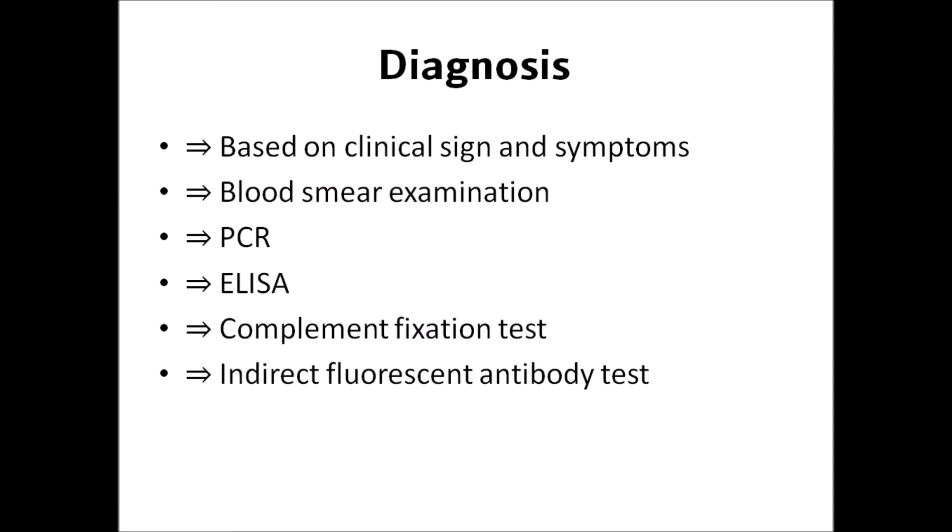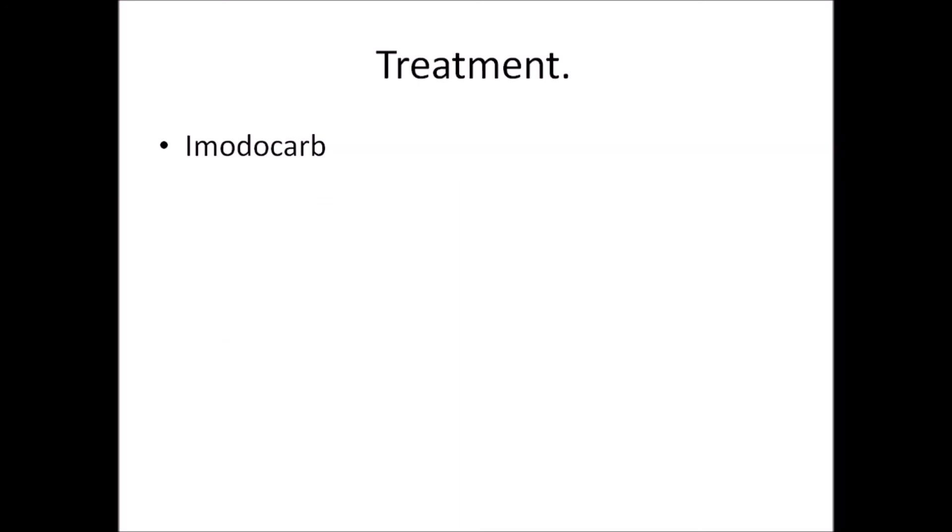For the diagnosis of anaplasmosis, the diagnostic approach is based on clinical signs and symptoms, blood smear examination, ELISA, complement fixation test, and indirect fluorescent antibody test. The treatment for anaplasmosis is oxytetracycline. This is all about anaplasmosis — thank you.